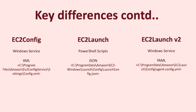Last but not least, it's important to understand how the configuration files for these agents work. These configuration files are used to control their operation. For EC2 config, it's an XML file called config.xml. For EC2 launch, it's a JSON file called launch-config.json. And for EC2 launch v2, it's a YAML file called agent-config.yml. The file locations for each of these are listed on the screen.